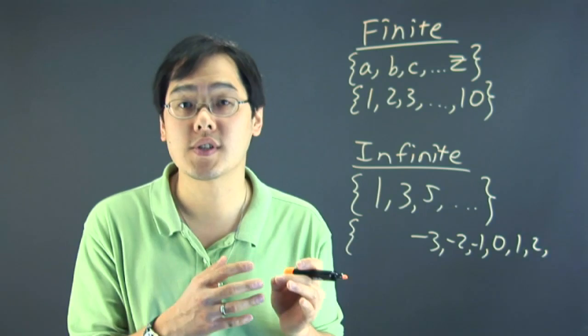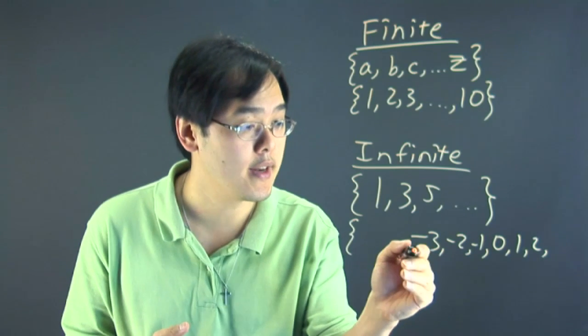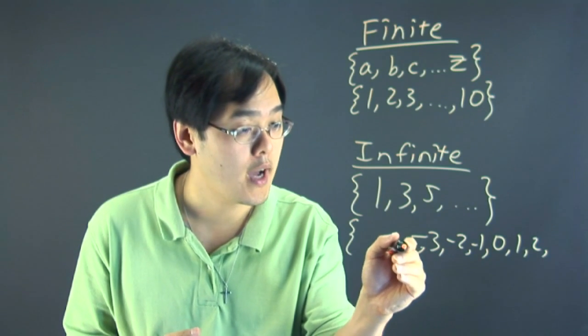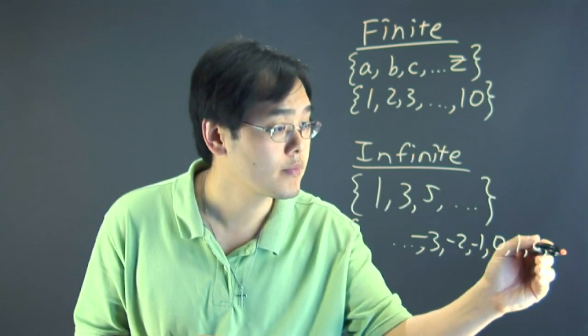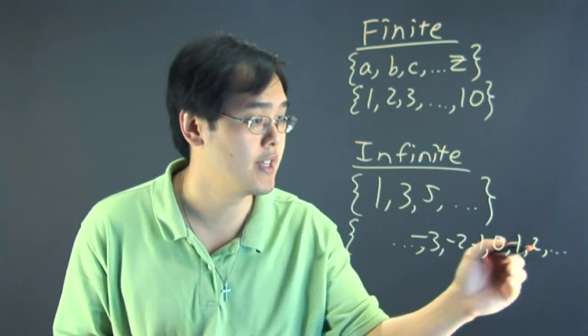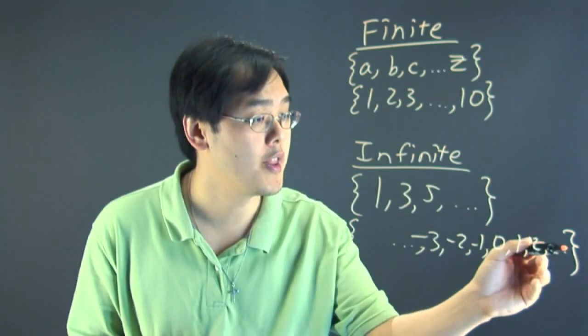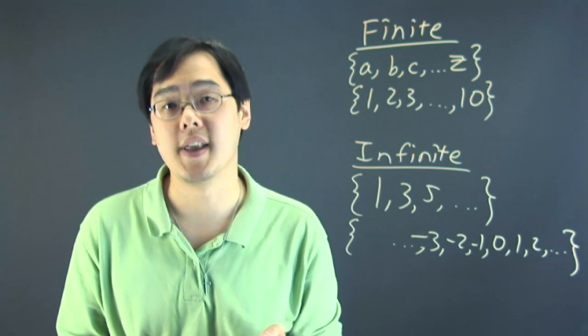To indicate that the sequence continues from both ends, just go ahead and with each comma, put repeating continuing dots there to indicate that the sequence does continue on the positive end and on the negative end.